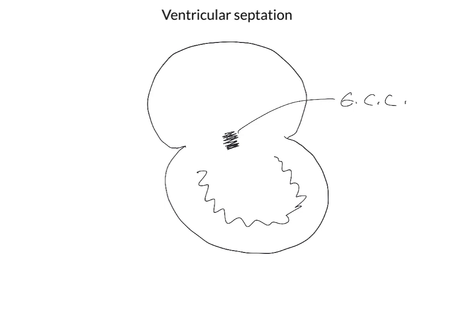The interventricular septum is formed from two components. There is a large muscular component that grows up from the ventricular wall. So here is the thick muscular component. Most of the interventricular septum is formed from this muscular component.